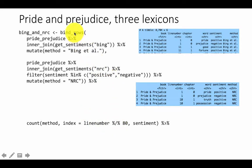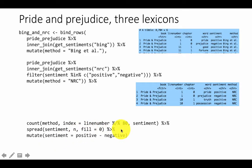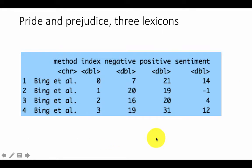We've created one tibble combining Bing and NRC together, then we're counting by method. Then, because we have positive and negative, we spread it out into two columns and calculate the net sentiment as positive minus negative.